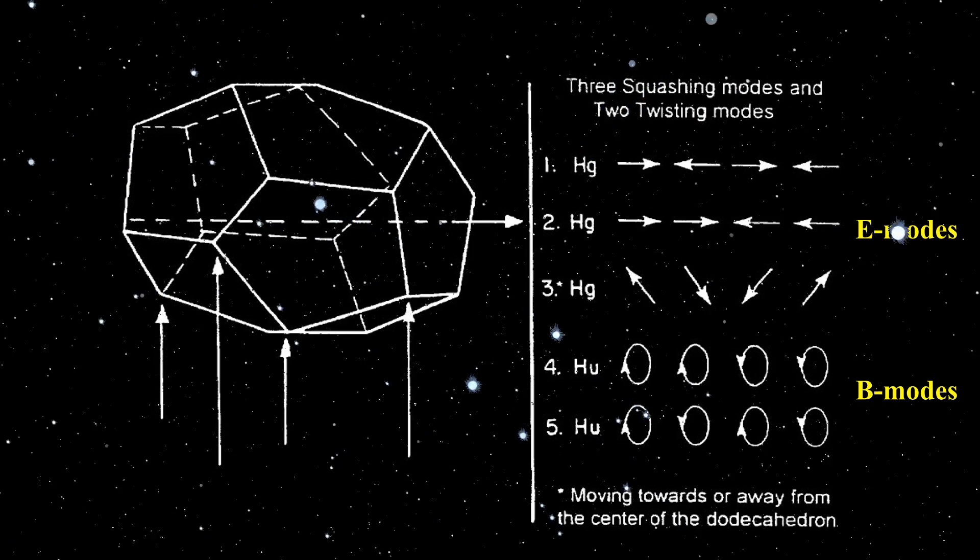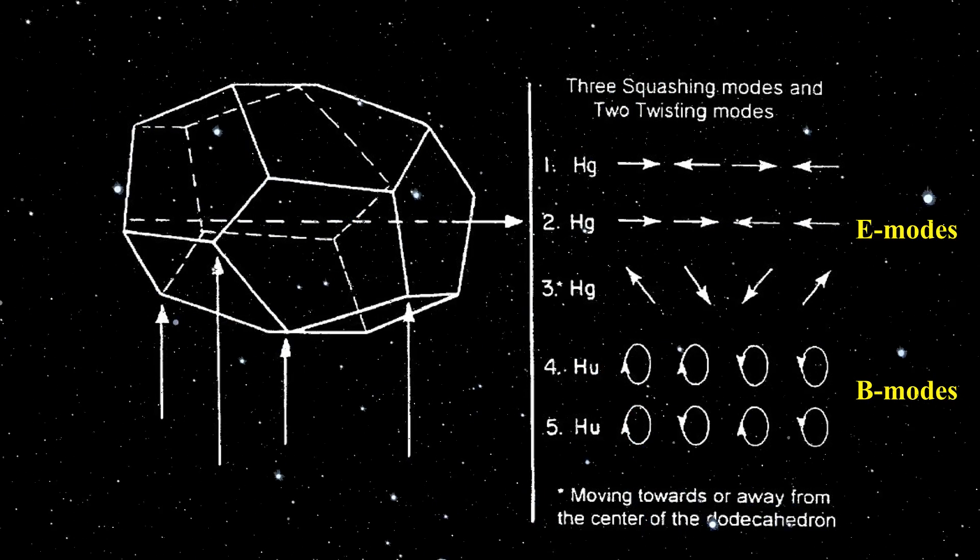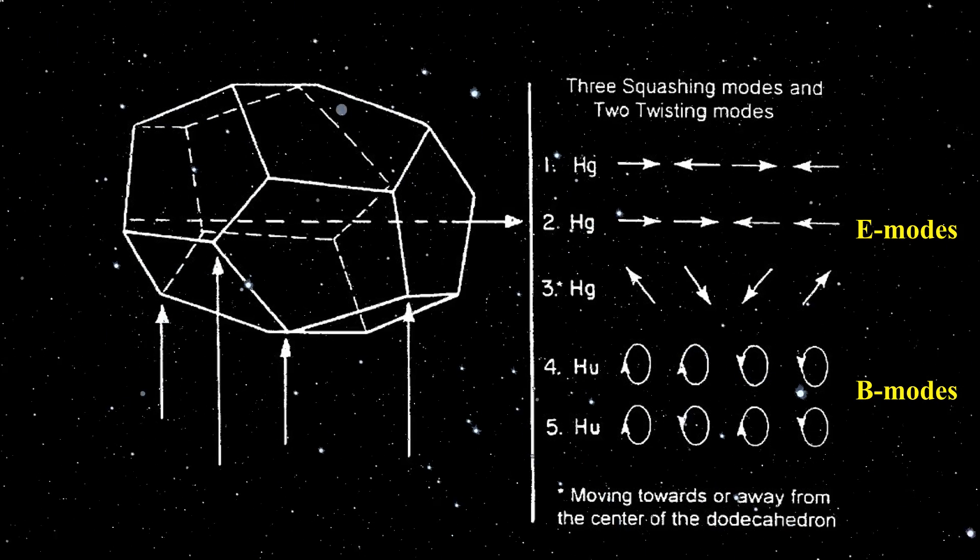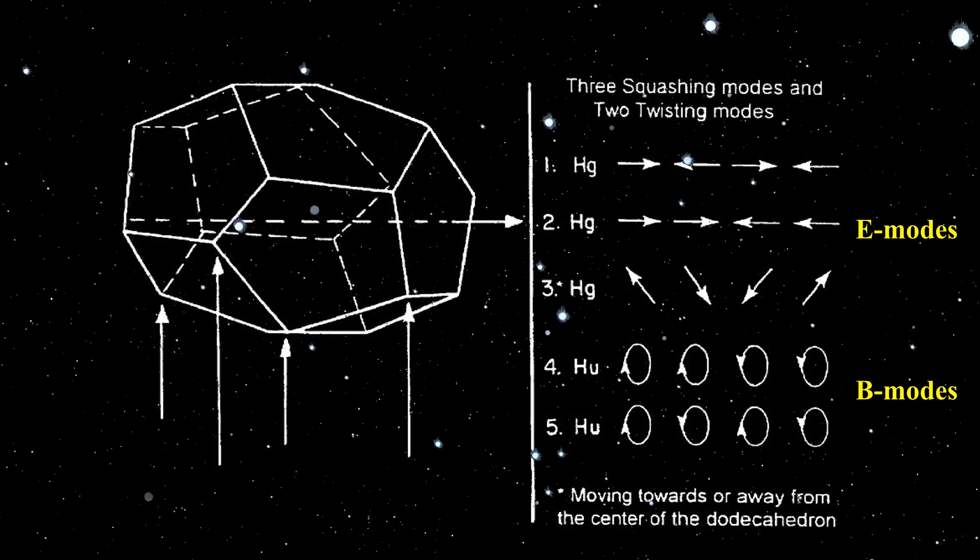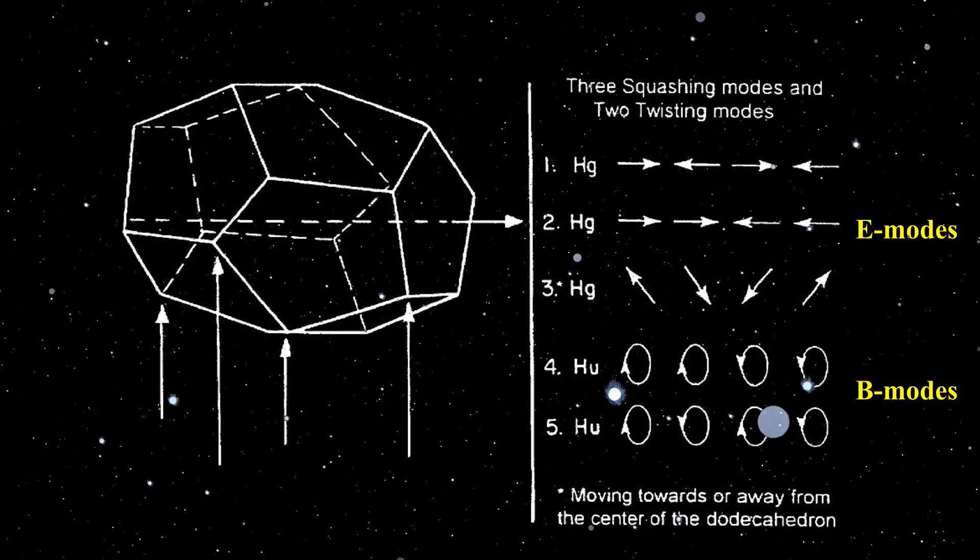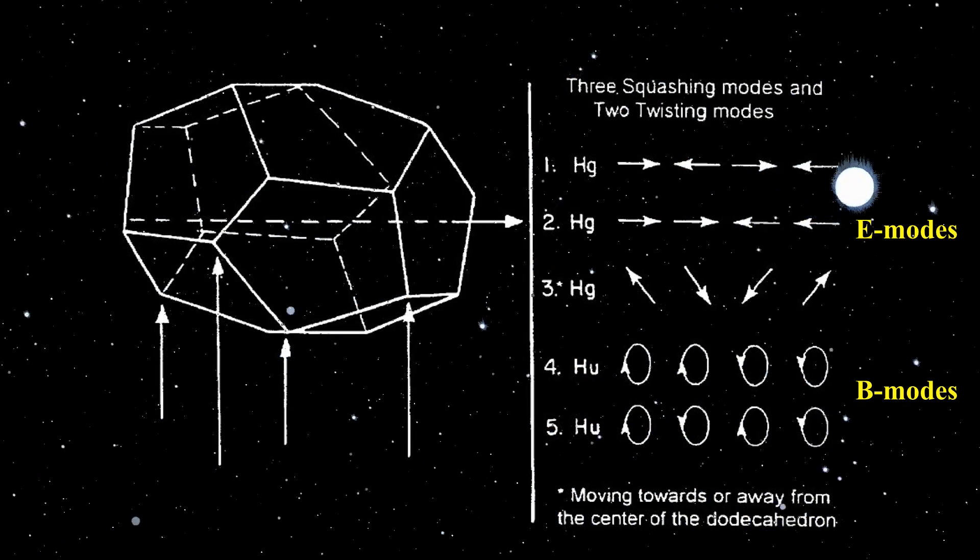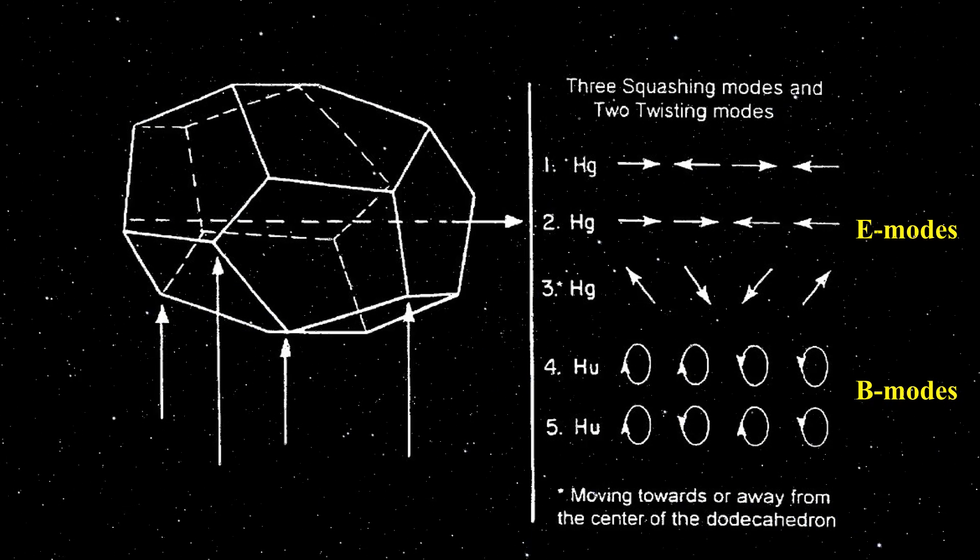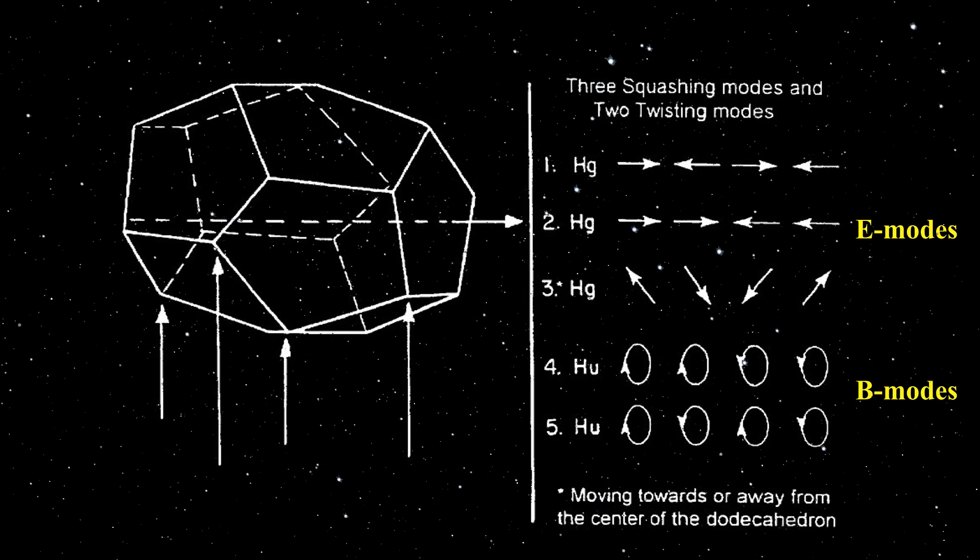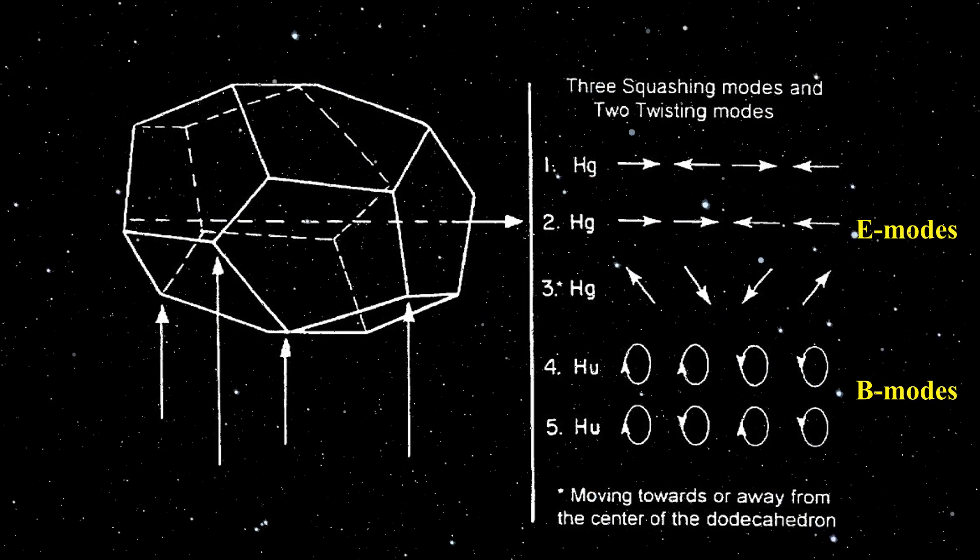Observations of CMB galactic dust foreground polarization show that the power of the E mode is twice that of the B mode, whereas they should be equal. This may be due to twice the power of the three water cluster Hg squashing vibrational modes compared to that of the two HU twisting modes, power being proportional to the squares of their amplitudes.